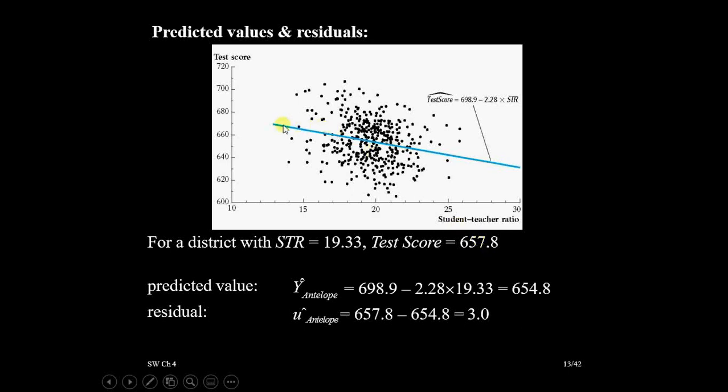But what is predicted value? Predicted value is your this blue line. For this 19.33, our predicted value is 698.9 minus 2.28 into 19.33, equals 654.8. So you see, this is 654.8.